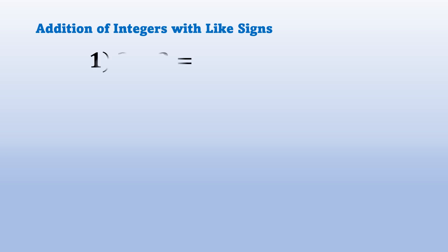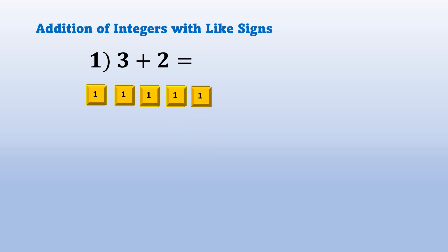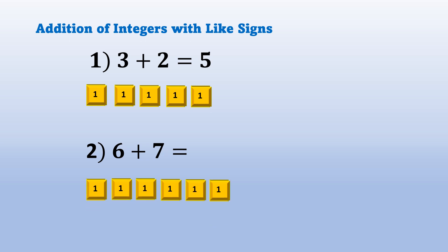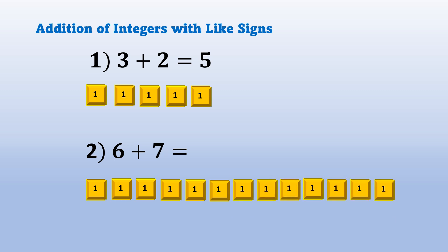Addition of integers with like signs. Example number 1: positive 3 plus positive 2 equals blank. We have 3 yellow tiles plus 2 yellow tiles equals 5 yellow tiles. Example number 2: positive 6 plus positive 7 equals blank. We have 6 yellow tiles plus 7 yellow tiles, equal to 13 yellow tiles.